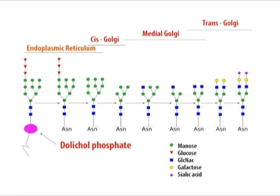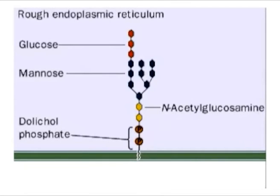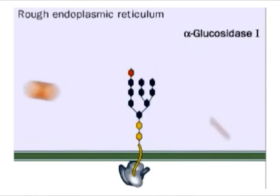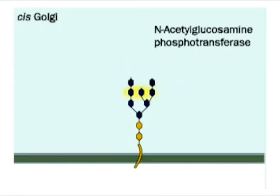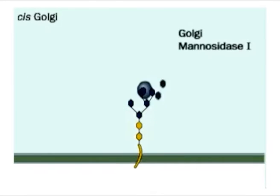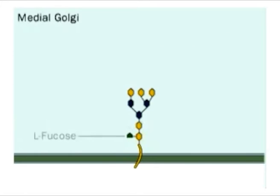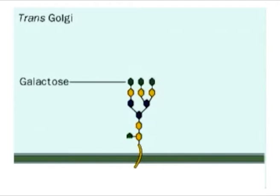Following transport to the Golgi apparatus, the N-linked oligosaccharides of these glycoproteins are subject to extensive further modifications in an ordered sequence of reactions. The first modification for proteins destined for secretion or the plasma membrane is removal of three additional mannose residues. This is followed by sequential addition of N-acetyl glucosamine, removal of two more mannose, addition of fucose and two more N-acetyl glucosamines. Finally, three galactose and three sialic acid residues are added.